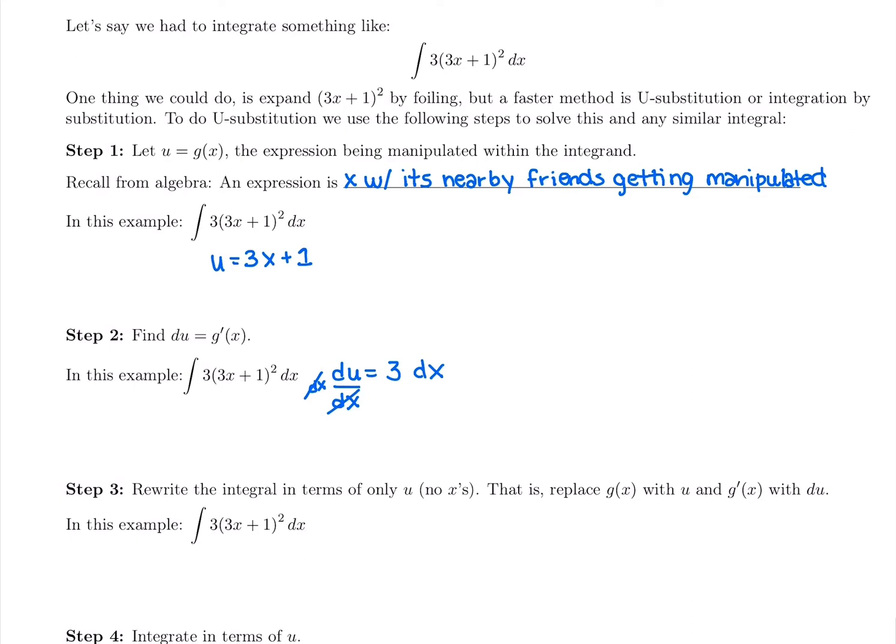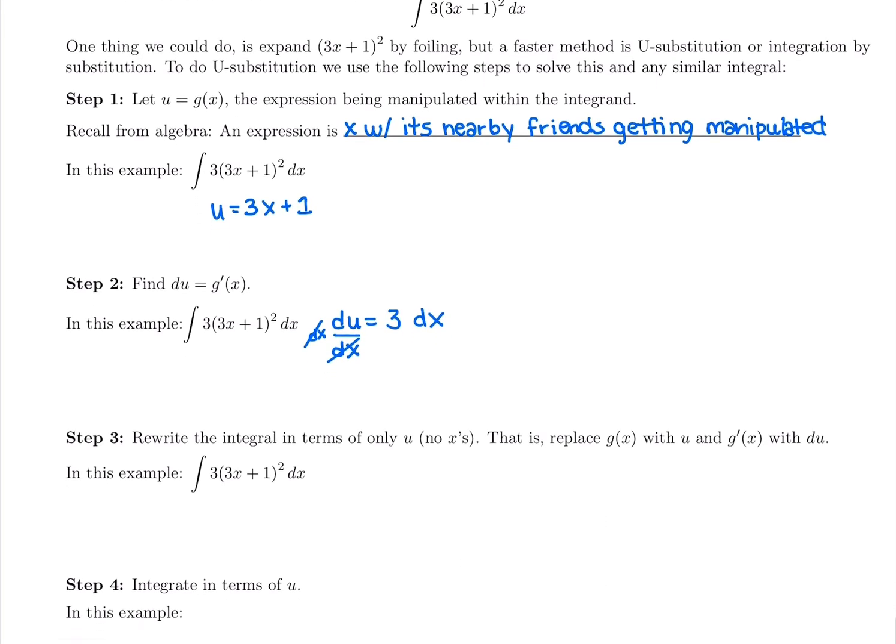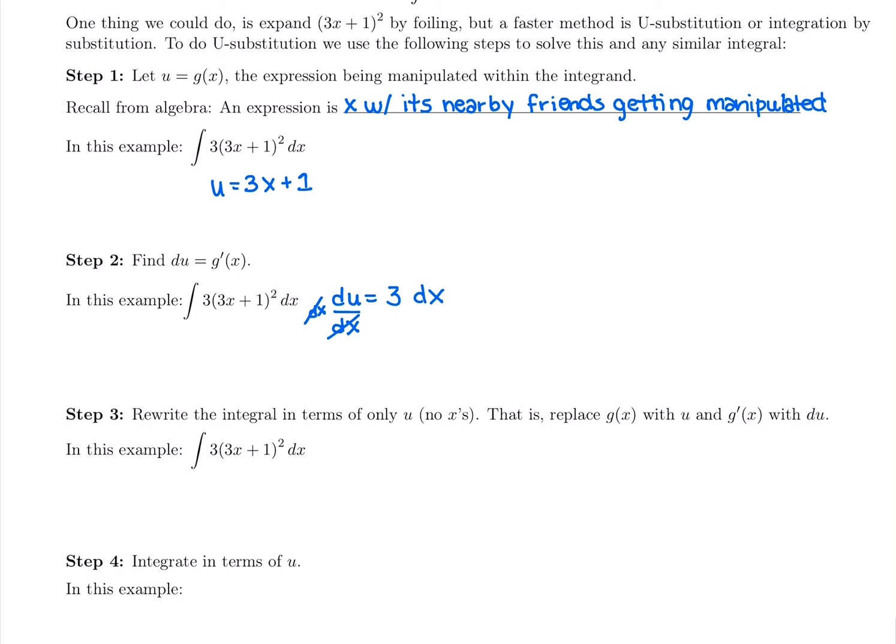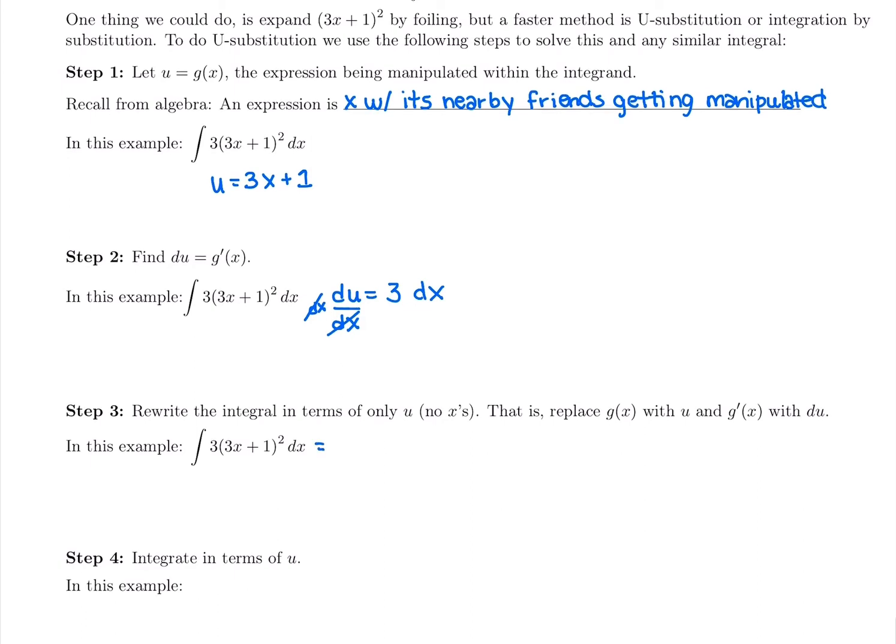Now we have u, which is the expression that was being manipulated, and we took the derivative of it, du/dx, and then multiplied by dx to get du by itself. Now we're able to rewrite what's in the integrand with all u's and no x's. We did the u part, and now we're going to do the substitution part, which I think is the most difficult part. But then it's going to make taking the antiderivative a lot simpler.